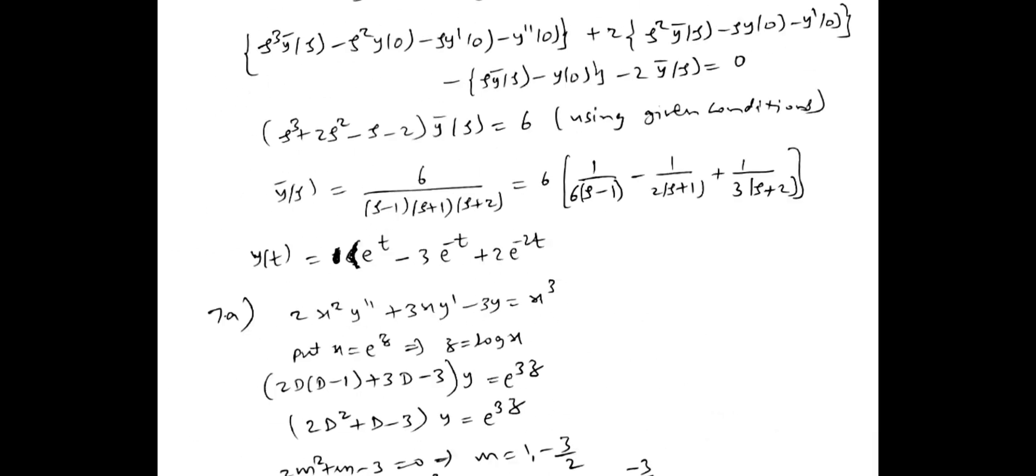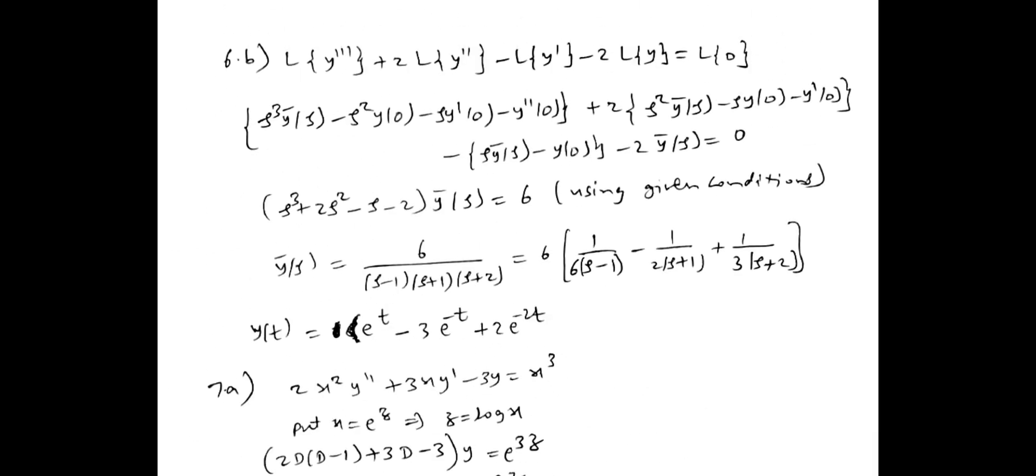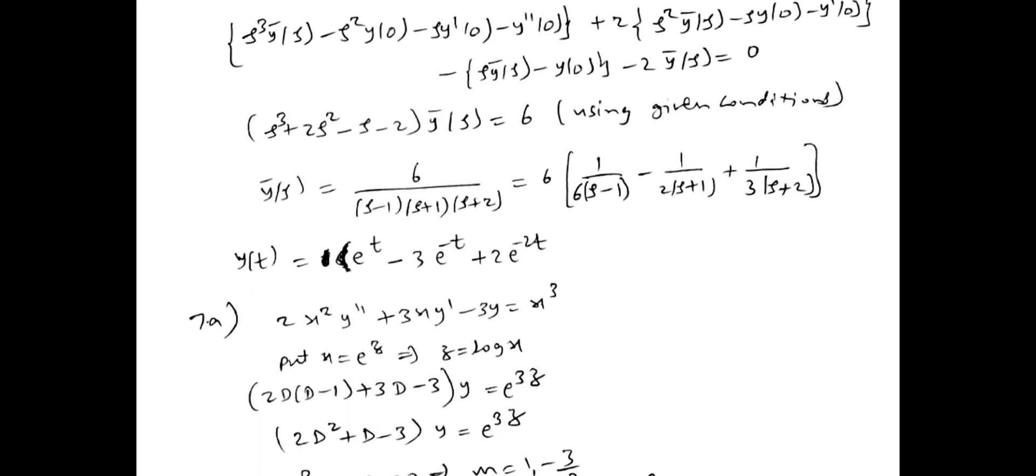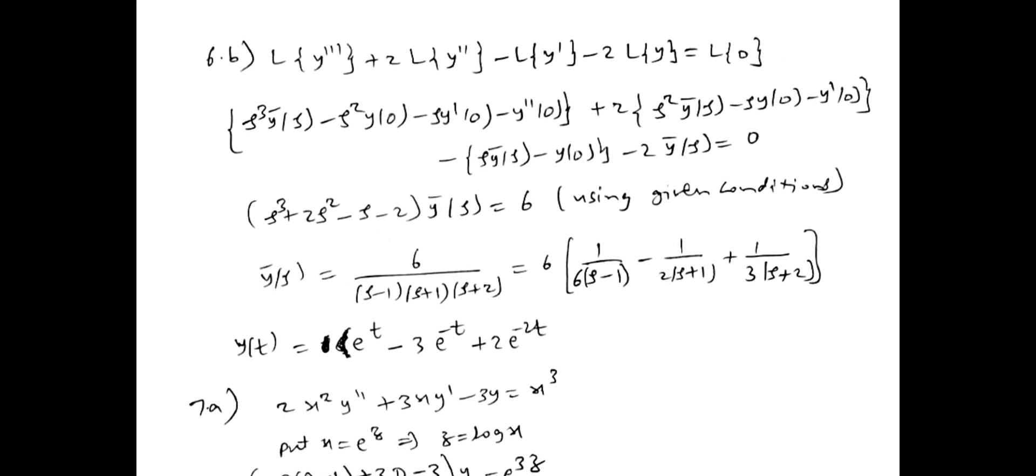Then sixth my B bit is also Laplace transform using ordinary differential equations. So we have to take L on both sides. Then we have to use L y triple dash formula. Then take out y of t terms common and send to another side. It will come into partial fraction method. Do it partial fractions. You will get the answer.